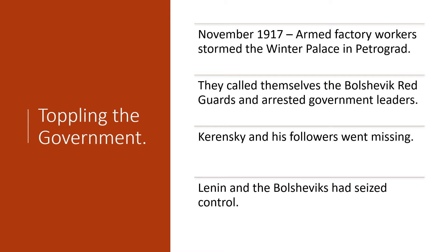In November of 1917, armed factory workers stormed the Winter Palace in Petrograd. They called themselves the Bolshevik Red Guards and arrested the government leaders of the Duma. Kerensky, who we talked about in our last lesson, and his followers went mysteriously missing, and Lenin and the Bolsheviks seized control of the Russian country.